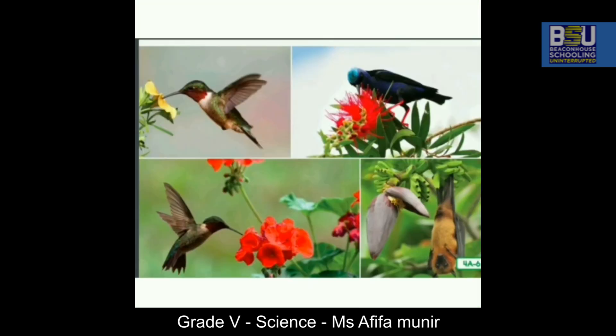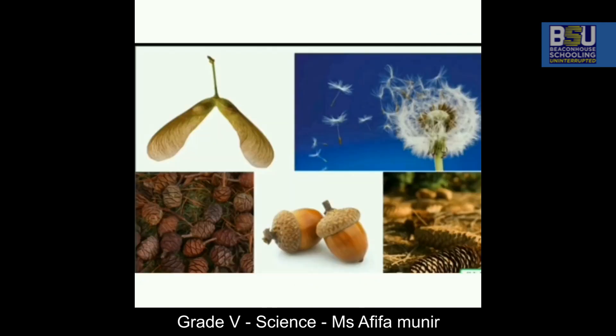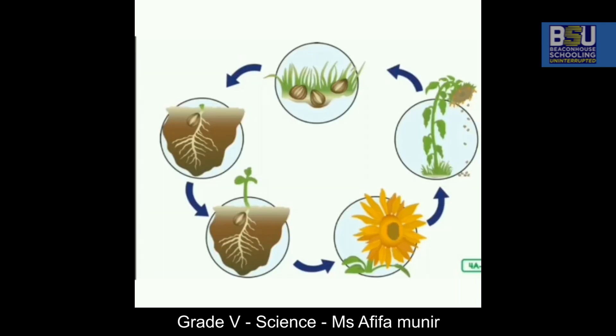Animals and birds like to eat different fruits, and the seeds are passed out through their bodies, resulting in dispersal. There are also seeds which are very light and are dispersed by wind. Some seeds dry out and are dispersed by explosion.